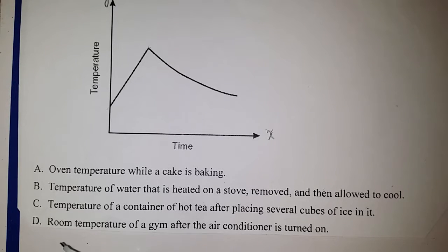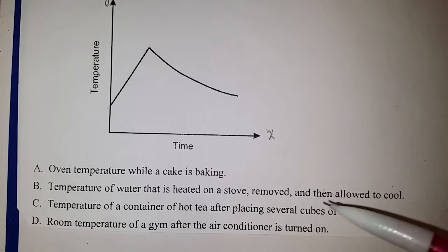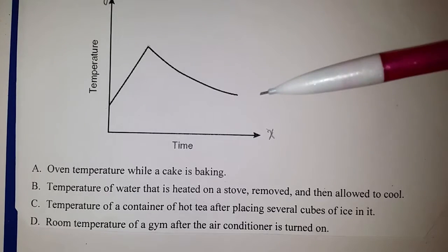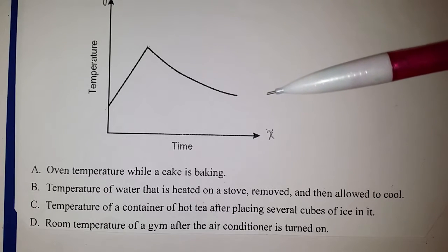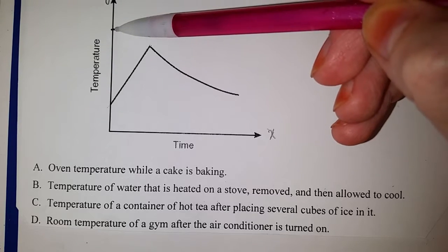So let's look at D. It says here the room temperature of a gym after the air conditioner is turned on. So this tells me that first the room temperature of a gym is pretty high, otherwise there would be no reason for us to turn on the AC. So that means the graph would actually have to start up here because the temperature is already a little bit higher.